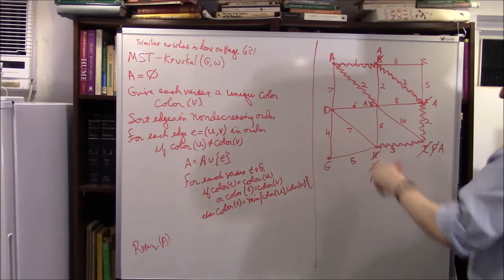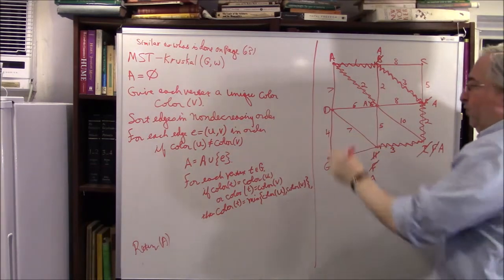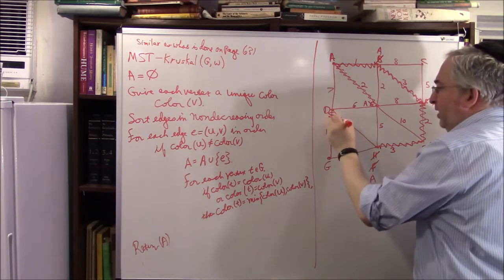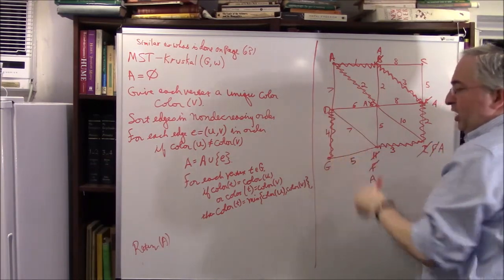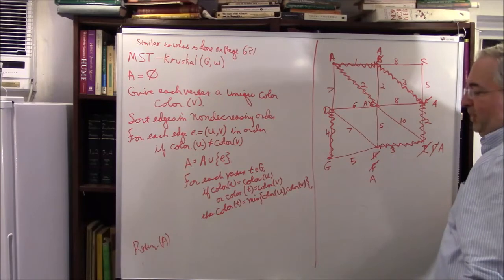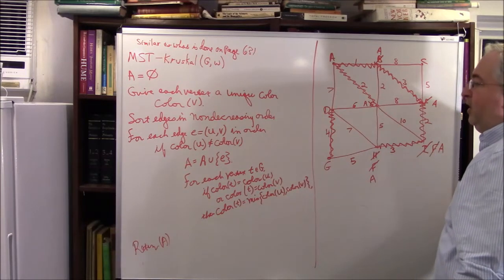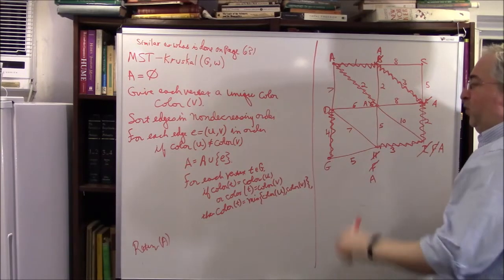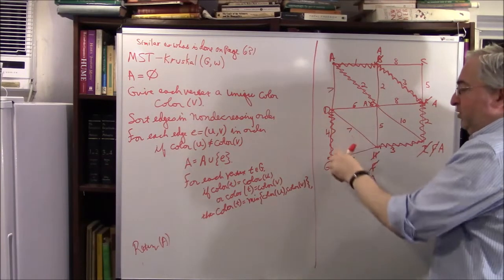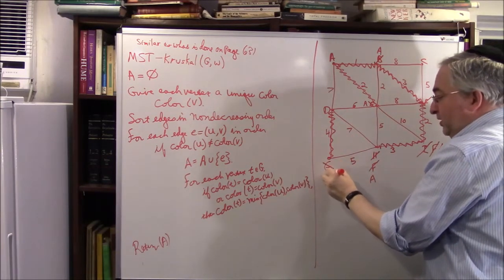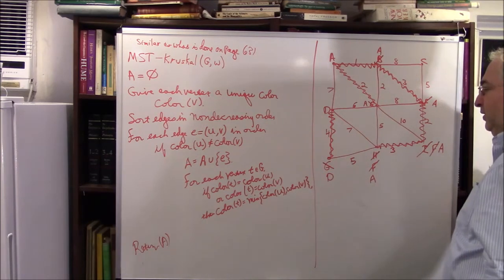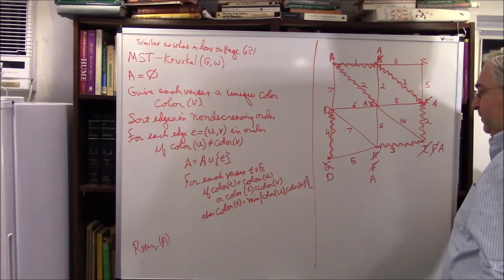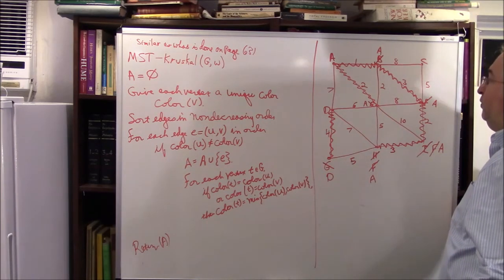We have a weight-4 edge. D and G are not equal, so we add it in. What's smaller, D or G? Answer: D. So we make G a D. We've dealt with the four.